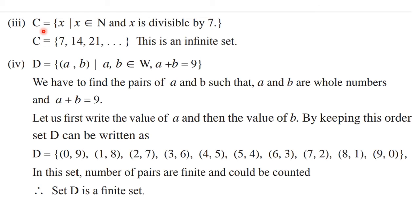Another example: C is the set of all x such that x belongs to natural numbers and x is divisible by 7. We need numbers divisible by 7 that belong to natural numbers. We have numbers like 7, 14, 21, and this series never stops. Therefore, the set is an infinite set.